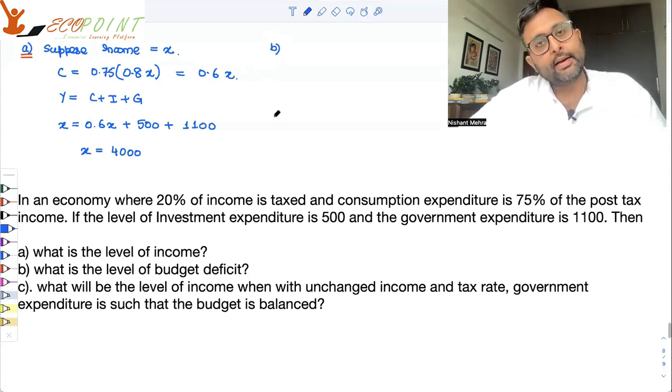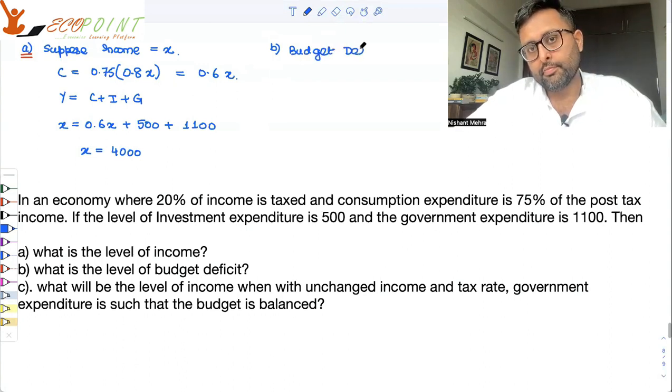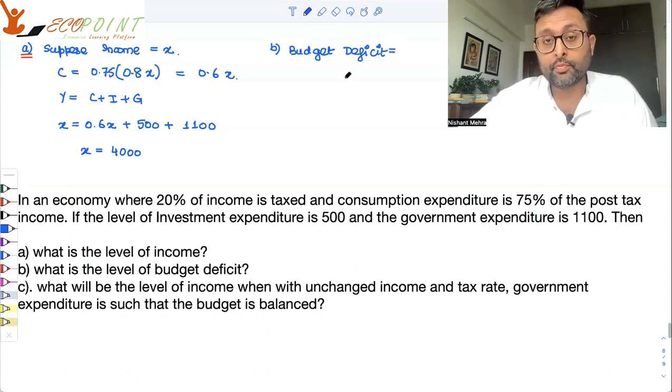So, budget deficit is government expenditure minus government revenue or the government income. What is government income? Government incomes are taxes. So, budget deficit is equal to government expenditure minus government income. Government incomes are taxes.